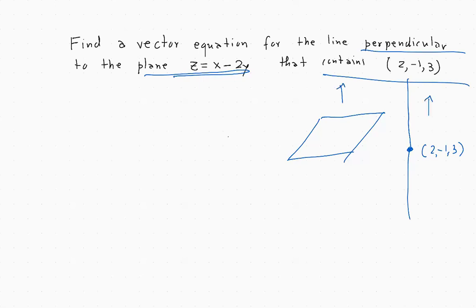To do that, I rewrite the equation of the plane as x minus 2y minus z equals zero. We need to have everything on the same side, and then we can just take the coefficients of x, y, and z.